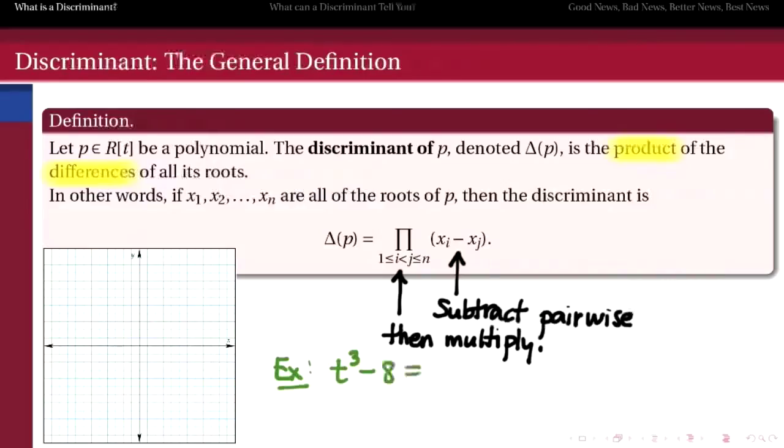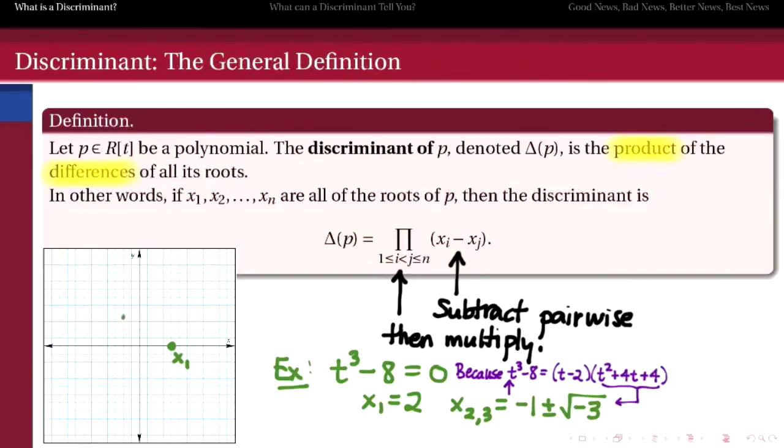As an example, here's the cubic polynomial t cubed minus 8 and its roots. One of them is the real cubed root of 8, namely positive 2. But the other two roots of this cubic are not real. We can find them by factoring t cubed minus 8 using the difference of cubes technique, and then solving t squared plus 2t plus 4 equals 0. Those roots, negative 1 plus minus radical negative 3, are arranged in the complex plane as shown here. So in fact, the roots of this cubic are spaced at the vertices of an equilateral triangle centered at the origin in the complex plane. That's kind of cool.